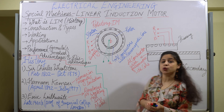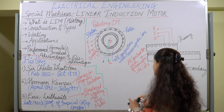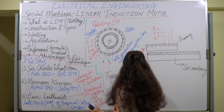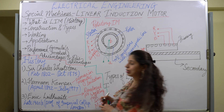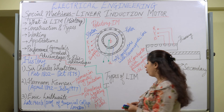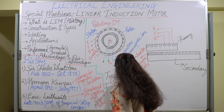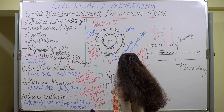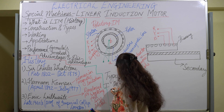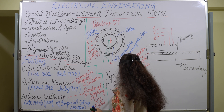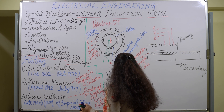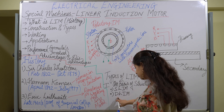Now let us look at the types of the linear induction motor. On the basis of structure, there are two types: the single-sided linear induction motor (SLIM) and the double-sided linear induction motor (DLIM).